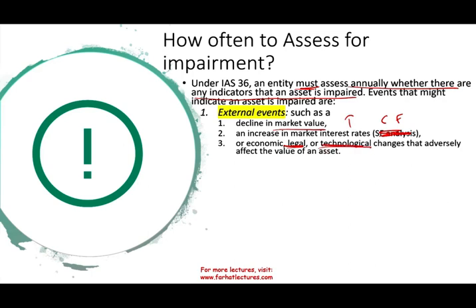Another external event is the FDA pulling your drug off the market — that's a major legal event. Or an economic downturn where your assets are no longer useful at full capacity; you wanted them to produce 10 million units per year, but now there is demand for barely 3 million units — your asset is impaired.